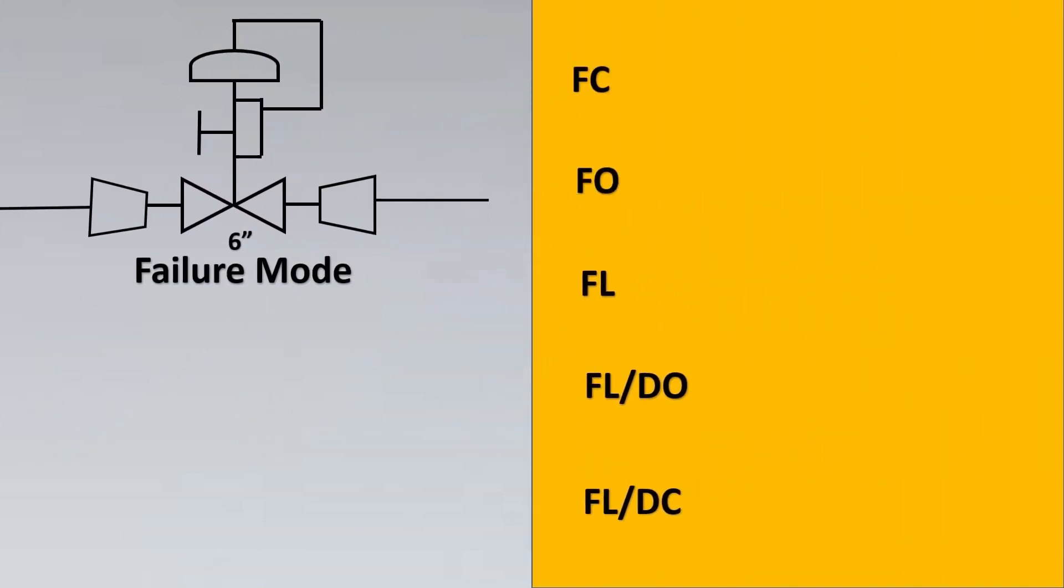In order to understand these failure modes, let us try to dissect each and every failure symbol. So if you see here, for example FC stands for fail close. So if the flow of air is stopped or there is an electrical issue, the fail close would be the valve default action, so the valve will get into its closed state.